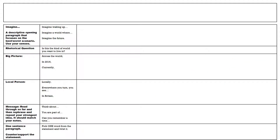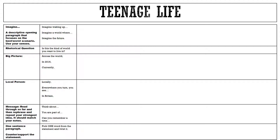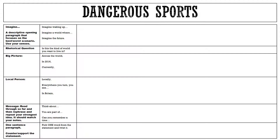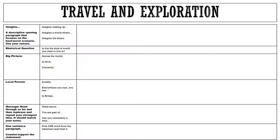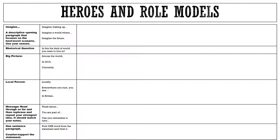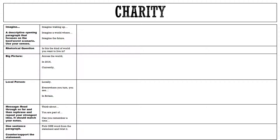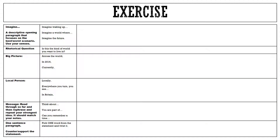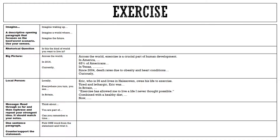This video will explain how to answer the question by following this structure, which is designed to allow your writing to be creative while at the same time accurate. It should also allow you to reuse ideas from other pieces — you can only possibly be asked about so many topics. Here are the ones most likely to come up: teenage life, dangerous sports, travel and exploration, television, recycling, heroes and role models, charity, and exercise. A statement in your exam will most likely have something to do with one of those topics.